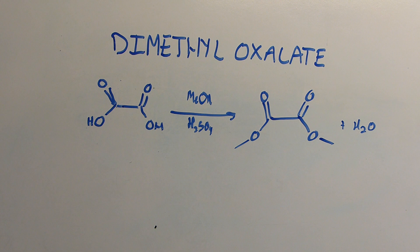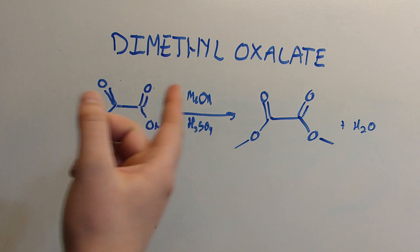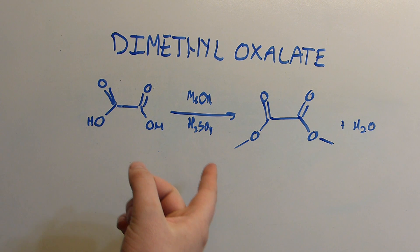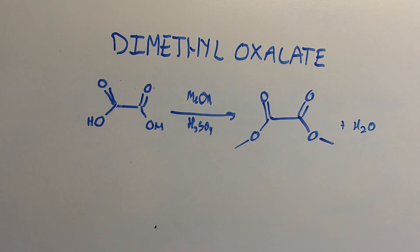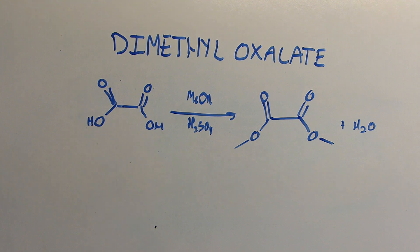This will proceed through a reaction known as the Fischer esterification, which I've done in a previous video, so I won't get too deep into that. But it's essentially an alcohol and a carboxylic acid reacted using an acid catalyst to form an ester and water. Removal of one of the products will drive this reaction, so we could continuously remove water.